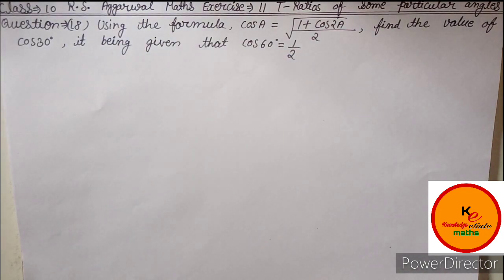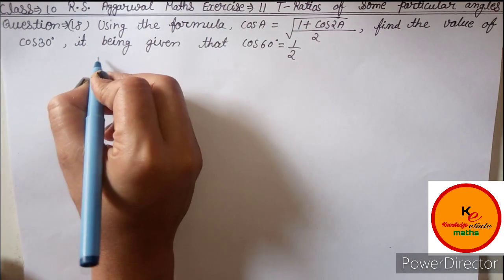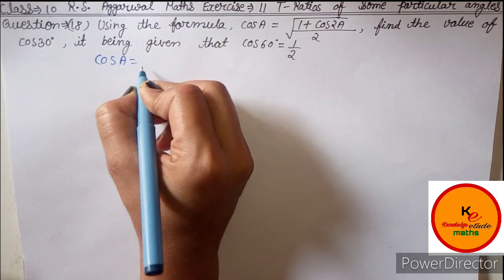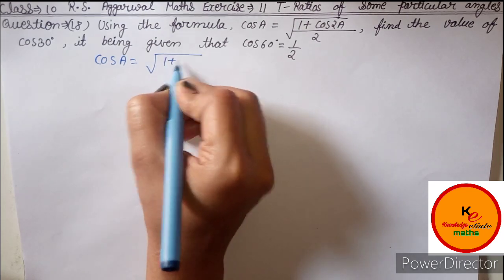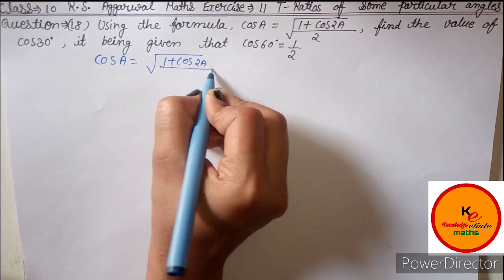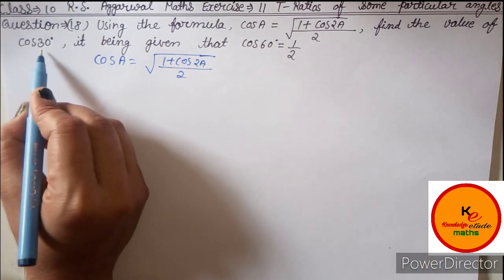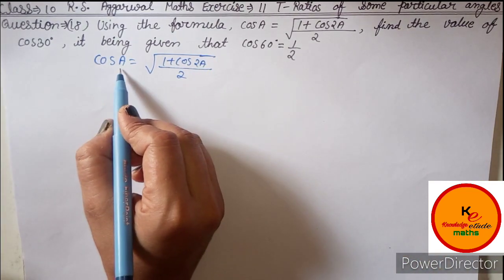Very easy question hai friends. As given in this question, cos A is equal to under root of 1 plus cos 2A divide by 2. You have to find cos 30 degree here, so A is given here from which you will get 30.